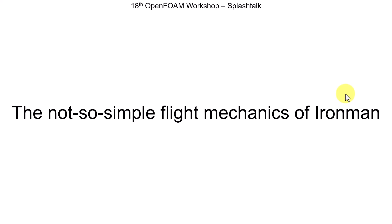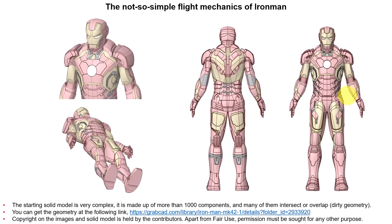We're going to use the same methodology used to do a flight mechanics study of an airplane — flight dynamics and aerodynamics performance. Just to introduce the geometries: this is what we're modeling. This is quite a complex geometry. We have Iron Man and we want to see if it actually flies — whether what we see in the movies is true or not, or how we could control it.